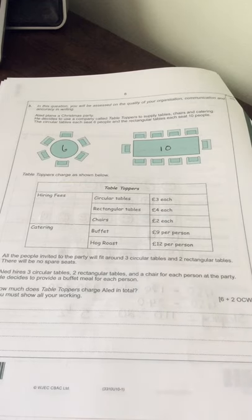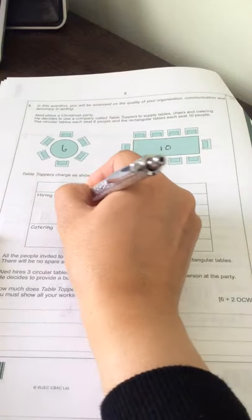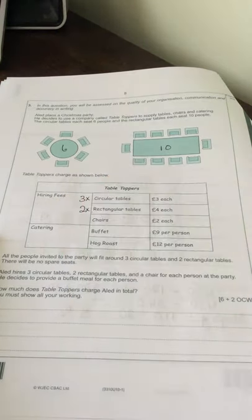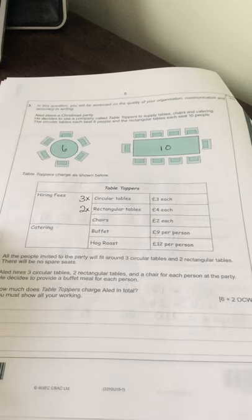All the people invited to the party will fit around three circular tables. So we need three circular tables and two rectangular tables. And there'll be no spare seats.